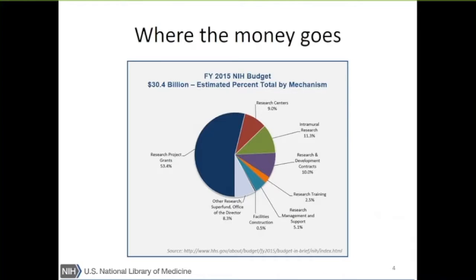The annual budget for NIH is approximately $31 billion. There was a bit of a kerfuffle this past week when the President's proposed budget came out — that proposal has a 25 percent decrease in funding for NIH — but what Congress decides to pass is completely up to them. The majority of the money that comes into NIH immediately goes out and funds grants all across the U.S., and there's even the Fogarty International Center that funds some international researchers.